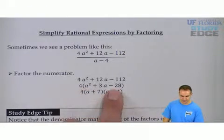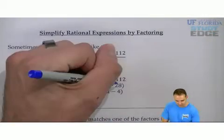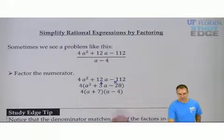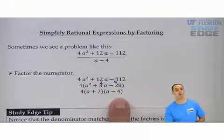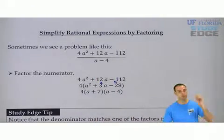Check it out. We factor out a 4, and then how did I get from this step to this step? I asked myself, what multiplies to negative 28 and adds to 3, and I eventually got a 7 and a negative 4. Just to remind you guys how to factor this.